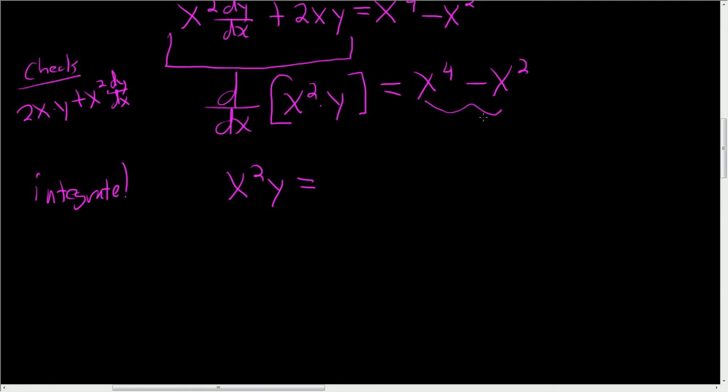be really careful here, don't forget to integrate the right-hand side. This is x to the 5th power over 5, minus x cubed over 3 plus a constant.